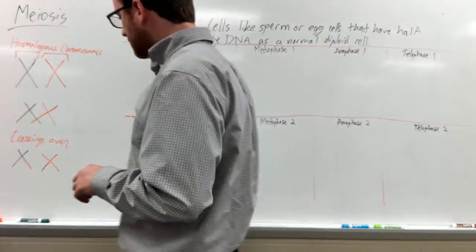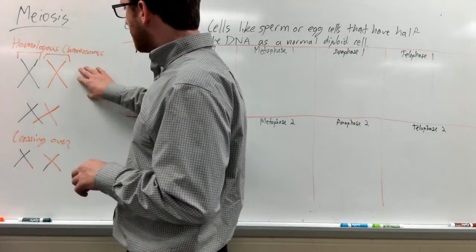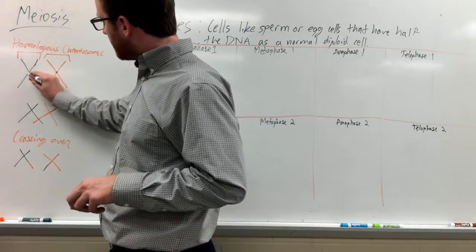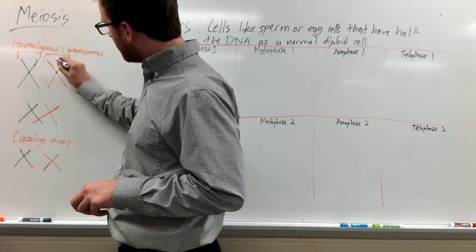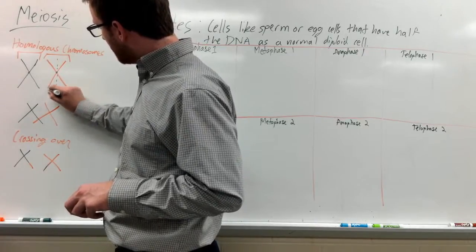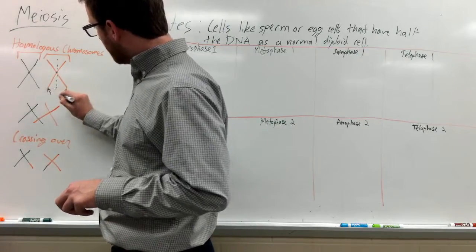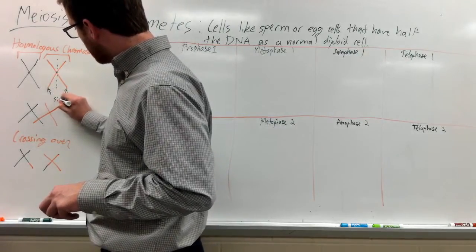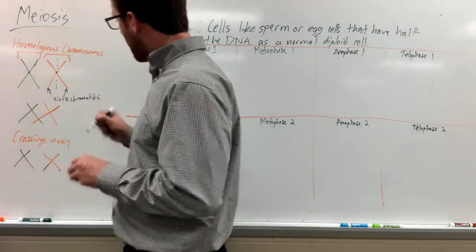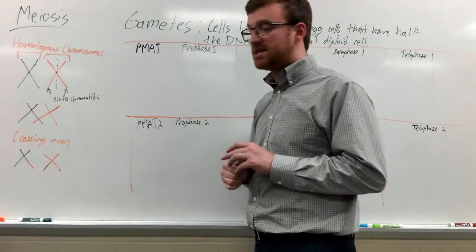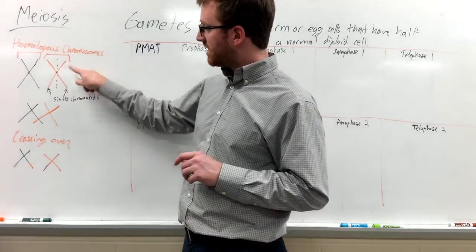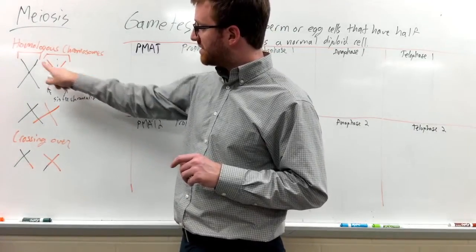Once you have these homologous chromosomes, they're held together by a centromere in the middle. Each chromatid — from this chromosome to this chromosome — these are called sister chromatids. They're going to share the exact same DNA, at least before crossing over. This chromatid is going to have the same exact DNA as the other one.